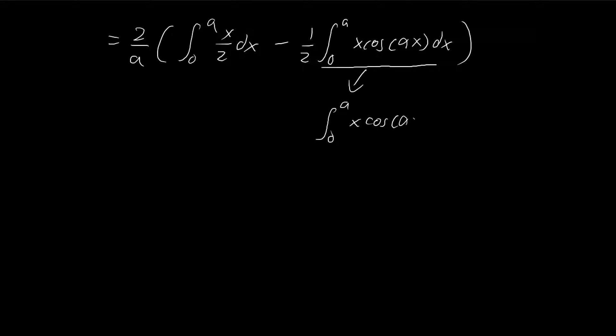Applying integration by parts, first we take the integral of this expression. Cosine becomes sine alpha x divided by alpha, and we evaluate it from 0 to A. Then we minus. Now we take the derivative of this expression while keeping this. It's just a process of integration by parts, from 0 to A.